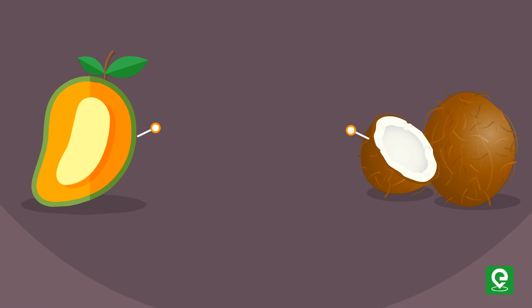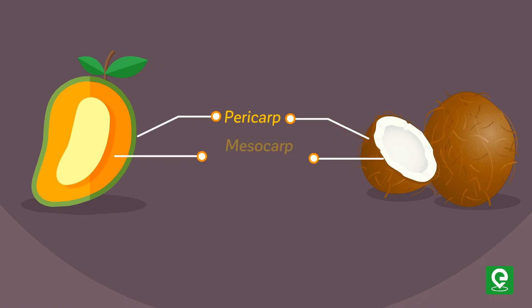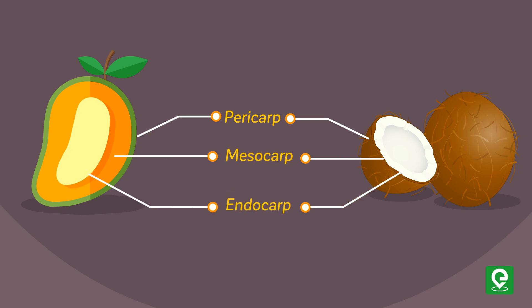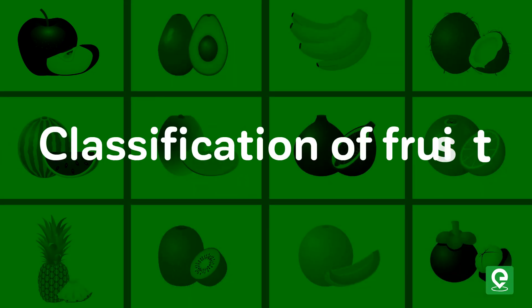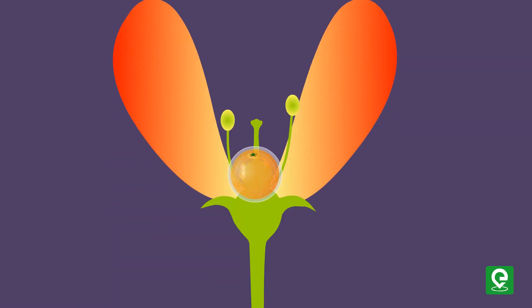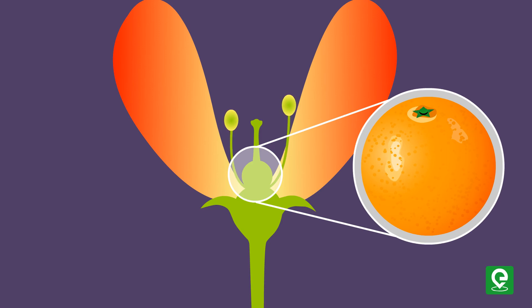When the pericarp is thick and fleshy, it is differentiated into the outer epicarp, the middle mesocarp, and the inner endocarp, as in mango and coconut. Let's know a little bit more about the classification of fruits. Fruits may be true or false — if they are developed from the ovary, they are called true fruits.